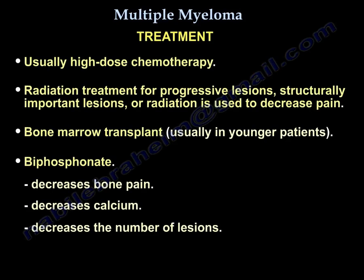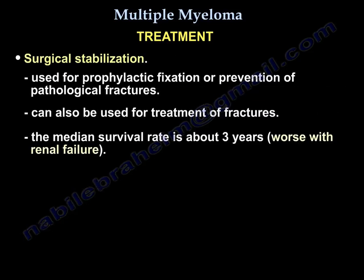Treatment is usually high-dose chemotherapy. Radiation is used for progressive lesions, structurally important lesions, or to decrease pain. Bone marrow transplant is another treatment option. Bisphosphonates are used to decrease bone pain, decrease calcium, and decrease the number of lesions. Surgical stabilization is used for prophylactic fixation or prevention of pathological fractures, and can also be used for existing fractures. Median survival is about three years, worse with renal failure.